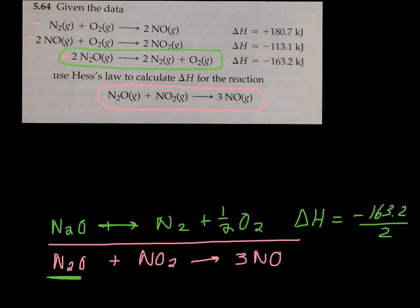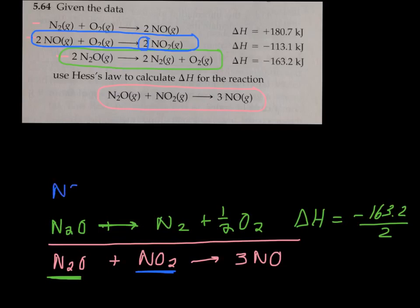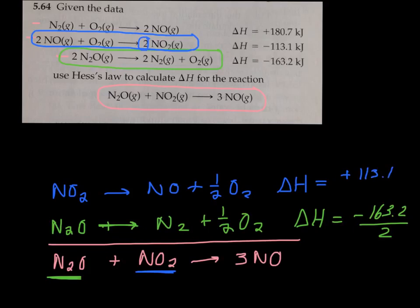Next, I need NO₂, so I find the equation that has NO₂ in it. But it's on the wrong side, so I have to reverse it. Plus, I want one of them, not two, so I reverse and divide by two: NO₂ → NO + ½O₂. Whatever I do to the reaction, I do to the heat — reversing it makes it +113.1, and dividing by two gives +113.1 divided by 2.